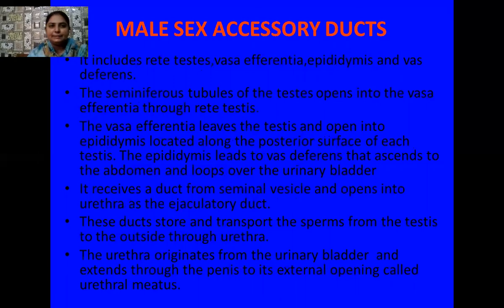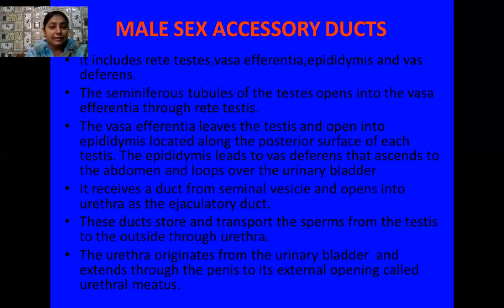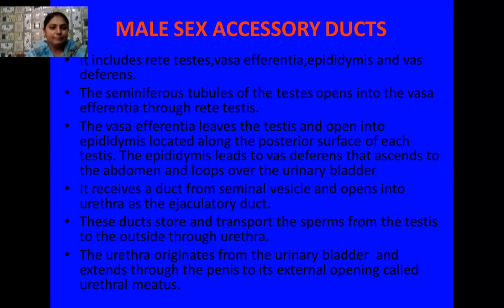The vasa efferentia later leaves the testis and opens into a slightly broader tube known as the epididymis, which is located along the posterior surface of each testis. The epididymis leads to the vas deferens, which enters the abdominal part of the male reproductive system and loops over the urinary bladder. The urinary bladder also receives ducts from male accessory glands such as seminal vesicles and prostate gland, which open into the urethra through an ejaculatory duct. These ducts store and transport sperm from the testis to the outside through the urethra.